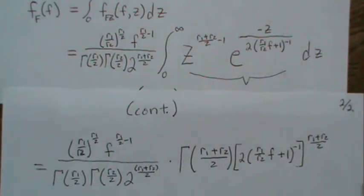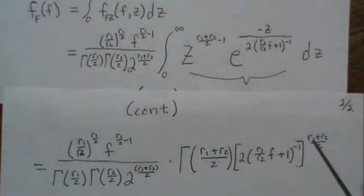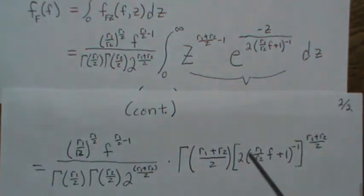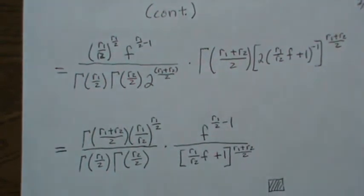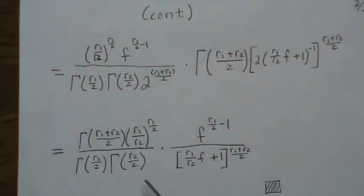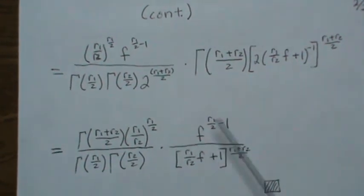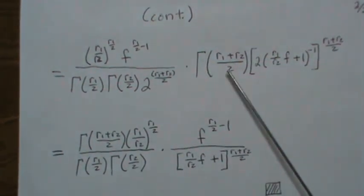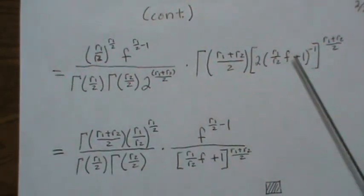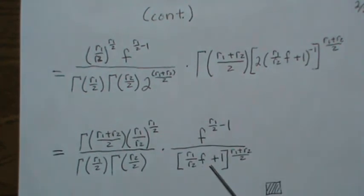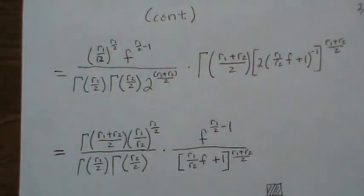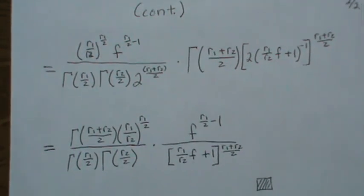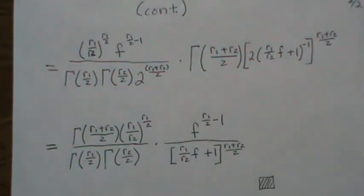To simplify, we notice that the factor of 2 raised to (r1 plus r2) over 2 appears in both numerator and denominator, so those 2's cancel. Bringing f out to the front and moving negative-exponent terms to the denominator, we arrive at the density of the F distribution with r1 numerator degrees of freedom and r2 denominator degrees of freedom.